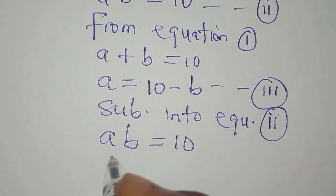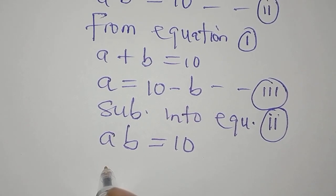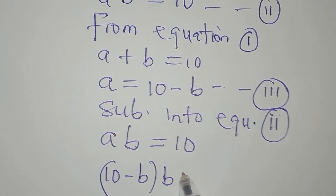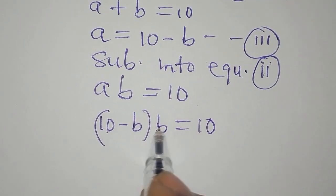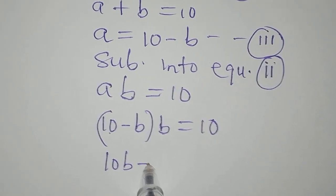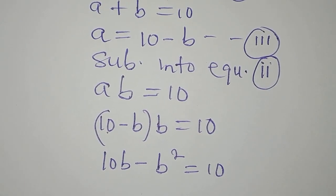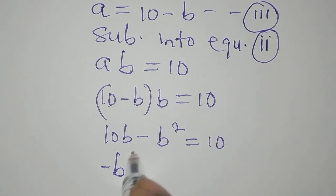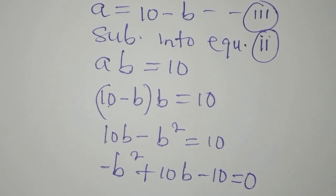Now 'a' is equal to 10 - b. We multiply: (10 - b)·b = 10, giving us 10b - b² = 10. Let me write this as -b² + 10b - 10 = 0.